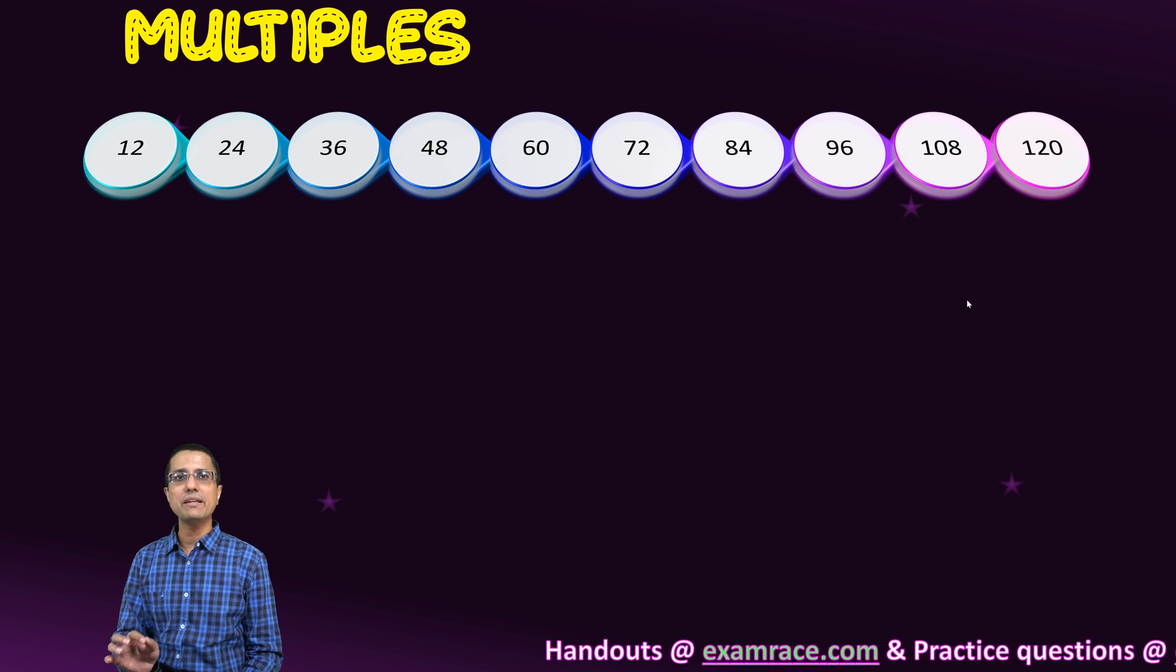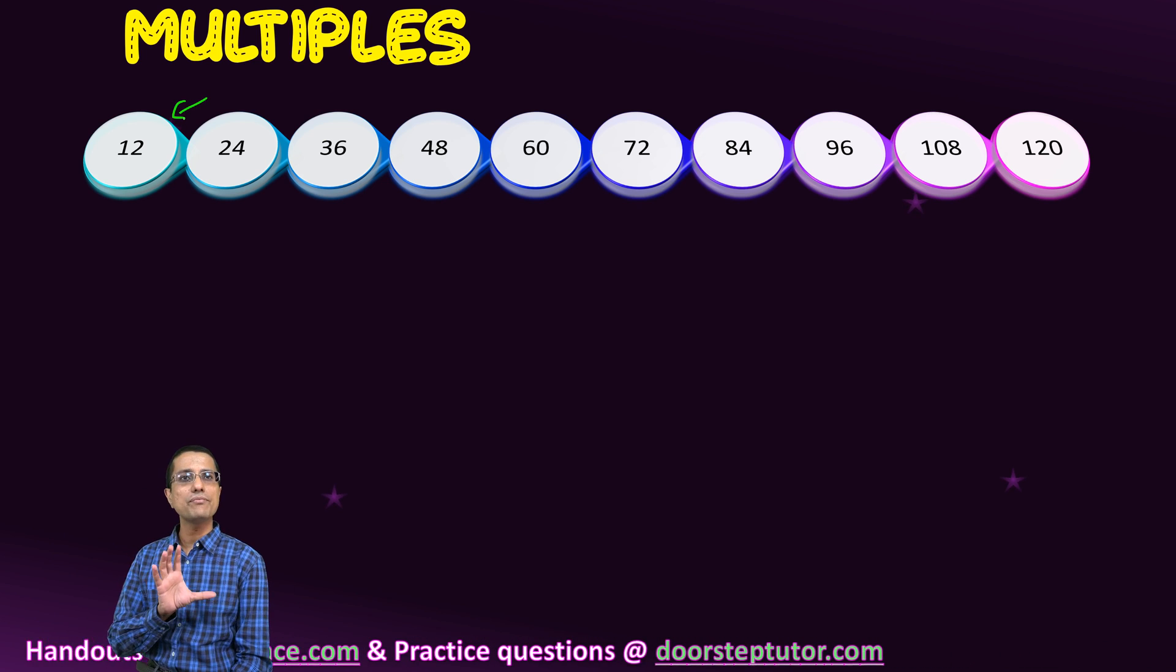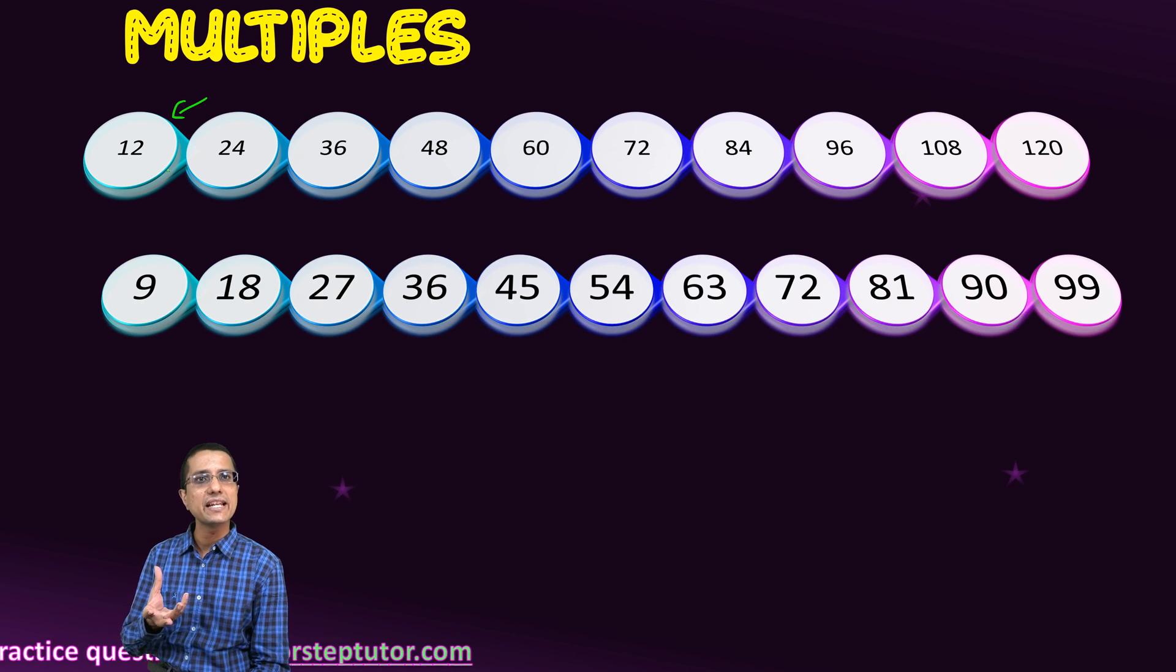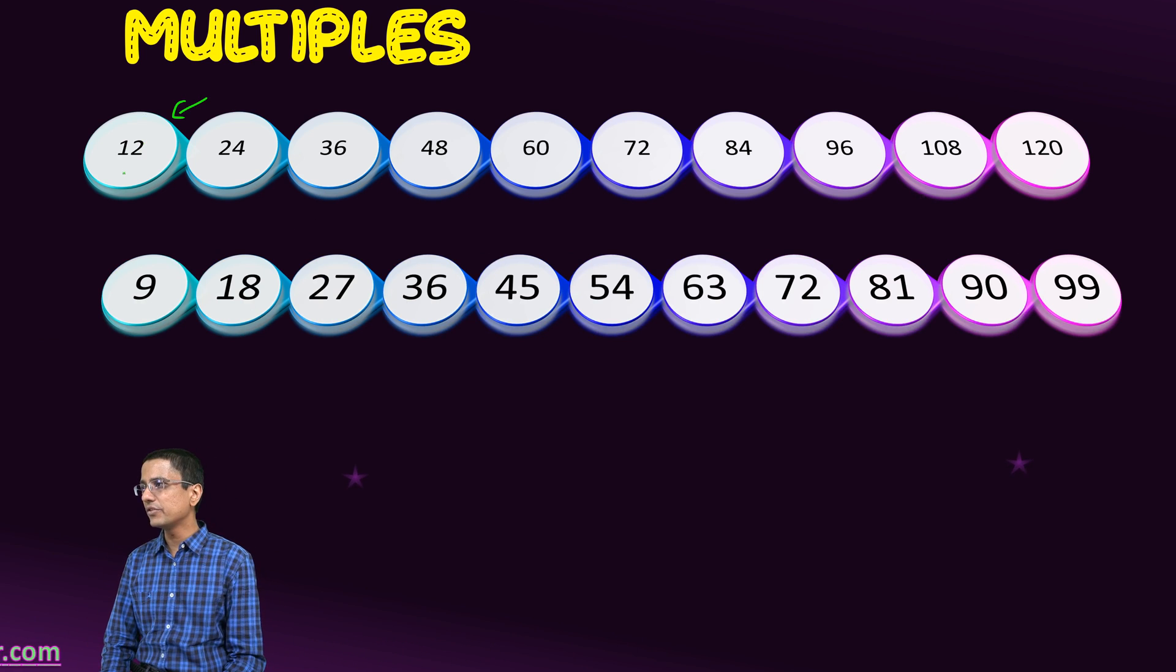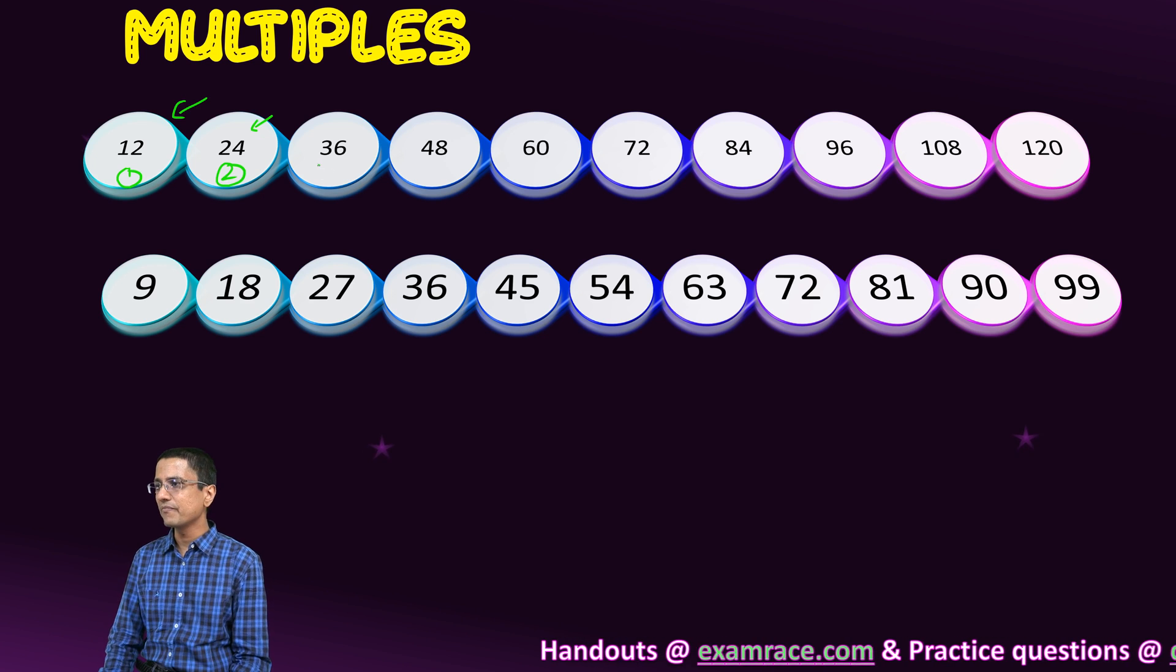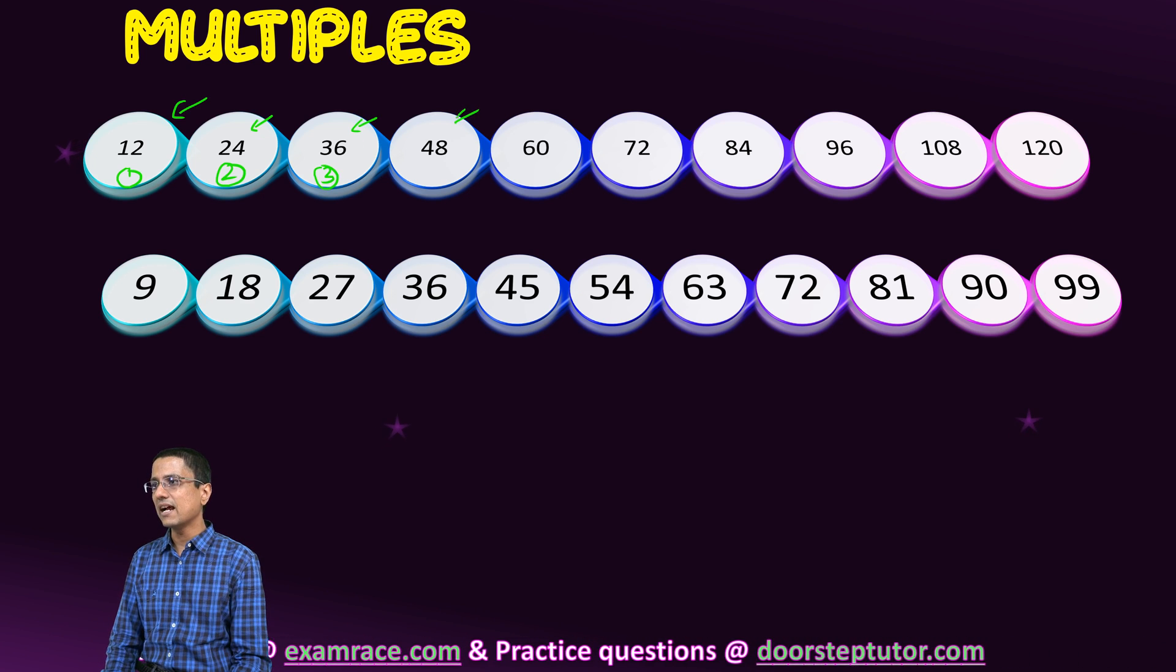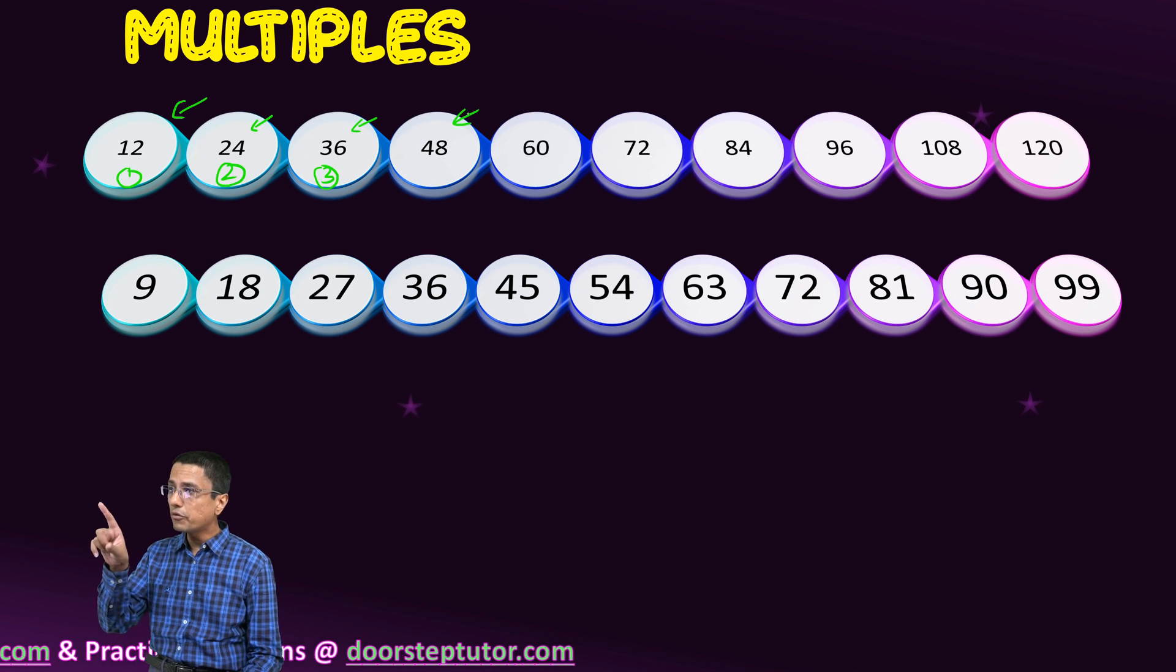Whenever you practice tables, everything which occurs in the table of 12, for example, is a multiple of 12. Anything which appears in the table of 9 is a multiple of 9. So I start with 12 ones are 12, then 12 twos are 24, and I keep on writing the final answer, the final product. 12 threes are 36, and all of these final products are called the multiples of 12, including 12 itself.